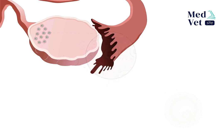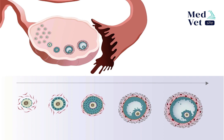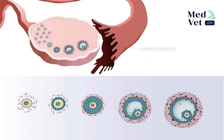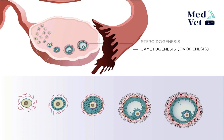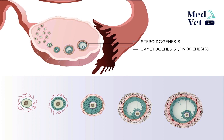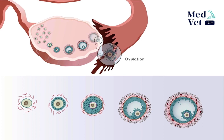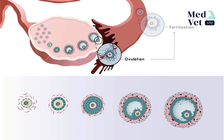These cells undergo transformations that allow the ovaries to develop a dual function. The first is gametogenesis, which consists of the development of the female gamete or oocyte located inside the follicle — in the female, this process is known as oogenesis. The second function is steroidogenesis, the synthesis of steroid hormones produced by the follicle that also contribute to the oocyte's growth and maturation. These two processes happen simultaneously for ovulation to occur and for possible fertilization.